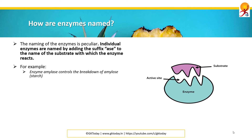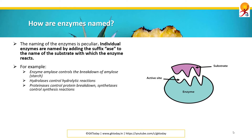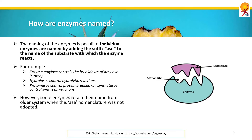For example, enzyme amylase controls the breakdown of amylose, which is starch. Hydrolases control hydrolytic reactions. Proteinases control protein breakdown. Synthetases control synthesis reactions.